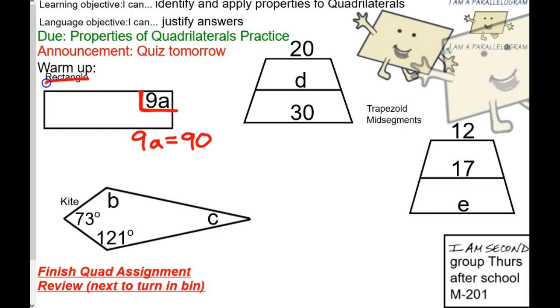All right, now, dividing by 9, we have to get rid of that 9 coefficient, so divide by 9, divide by 9. Now, A is going to equal what? Okay, 10. Y'all see how to do that. So on your quadrilateral packet, you have some rectangle problems where you have angles that are labeled like this, you've got to set it equal to 90 and solve, okay?